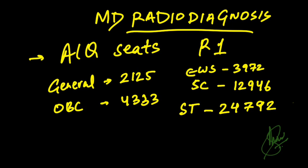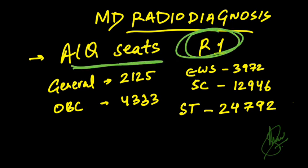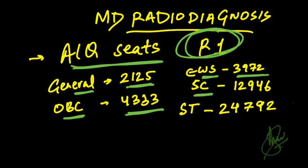For All India Quota seats, round 1 closing ranks: General category — 2125, OBC — 4333, EWS — 3972, SC category — 12946, and ST category — 24792.